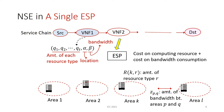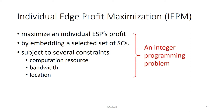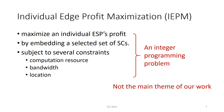The goal of the ESP is to minimize the cost on communication resources plus the cost on bandwidth consumption. This leads to the individual edge profit maximization problem: to maximize an individual ESP's profit by embedding a selected set of service chains. This problem is subject to several constraints like computation resource, bandwidth capacity, and location. It is an integer programming problem. Note that this is not the main focus of our work; this problem can be solved by a standard problem solver.